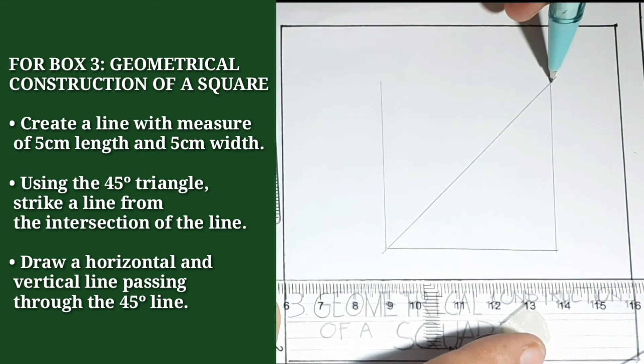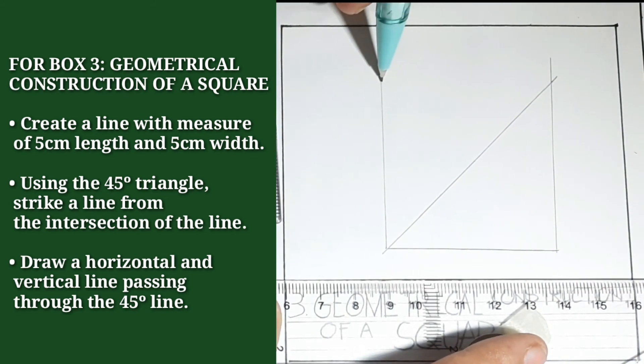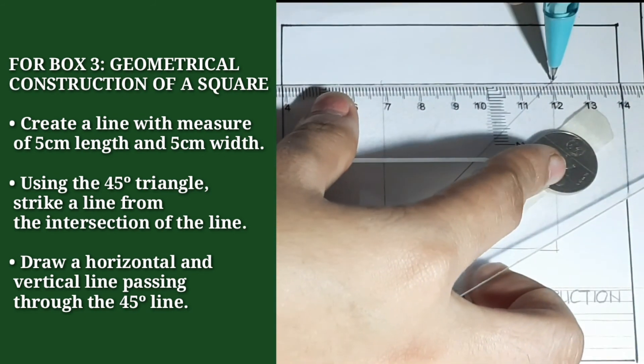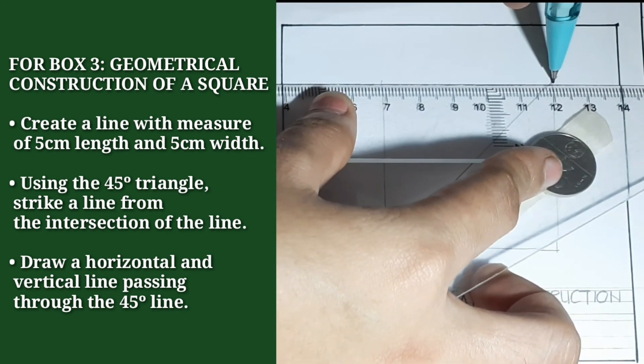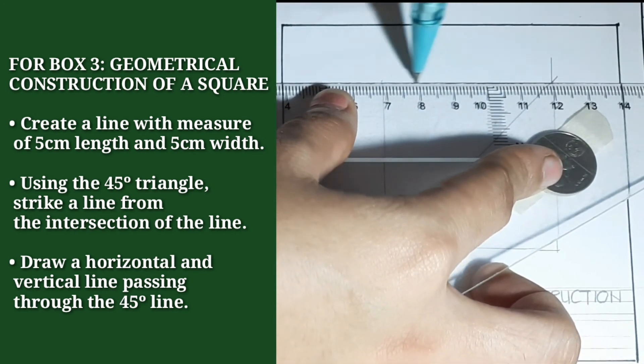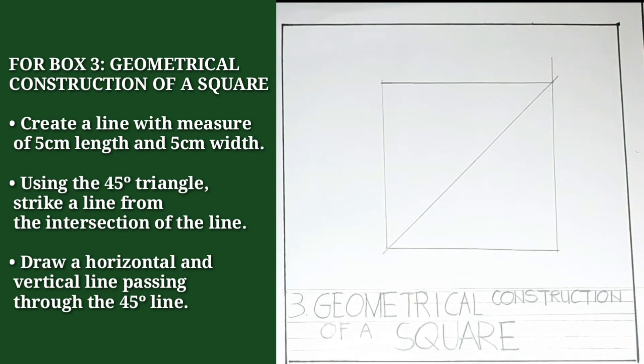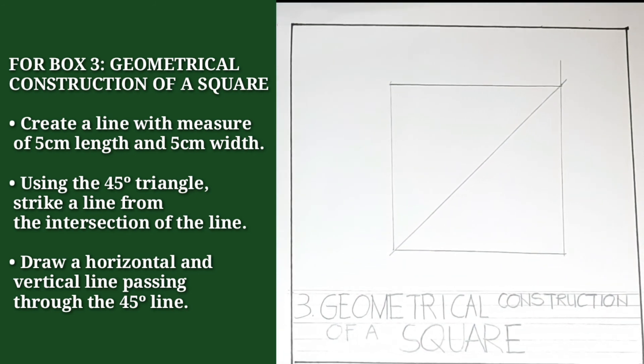And this line, this point, we will erase. We will now have our geometrical construction of a square.